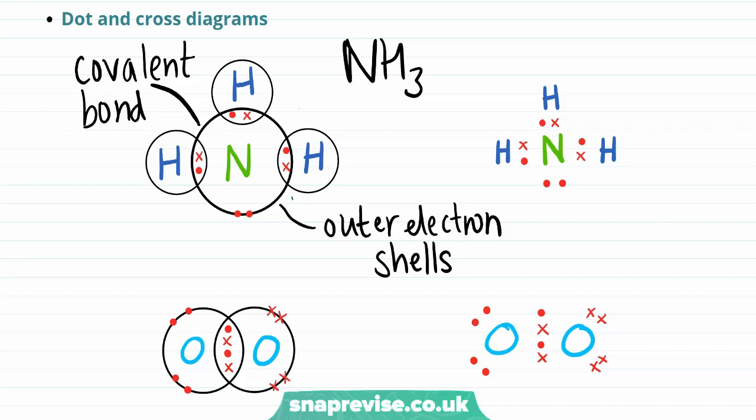The final feature to note on this diagram is the pair of electrons that originate just from the nitrogen and are not bonded to any other atoms. These are what is known as a lone pair of electrons.